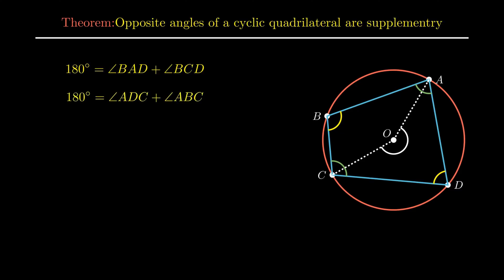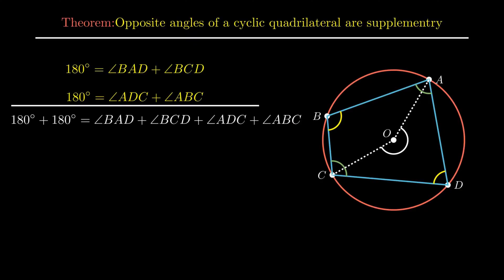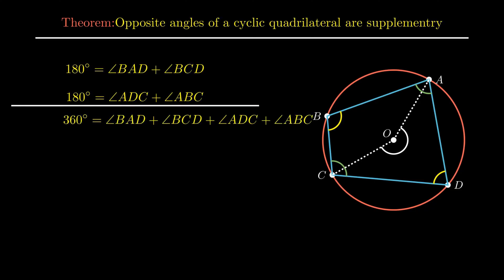Moving on to the next theorem. The second theorem states that the sum of all interior angles of a cyclic quadrilateral is always 360 degrees. To prove this, we just need to add the results of the theorems already proved — that is, the sum of opposite pairs of angles is supplementary. On adding the previous results, we get the LHS as 360 degrees, while the RHS is the sum of all interior angles, that is, sum of angle BAD, angle BCD, angle ADC, and angle ABC.